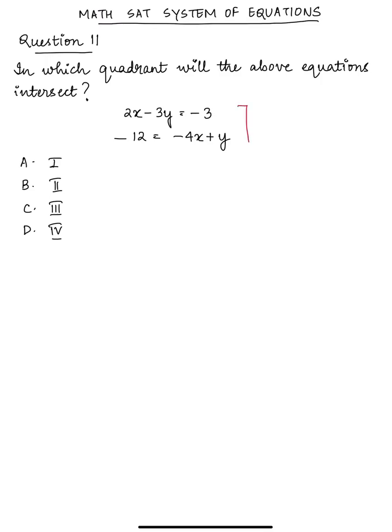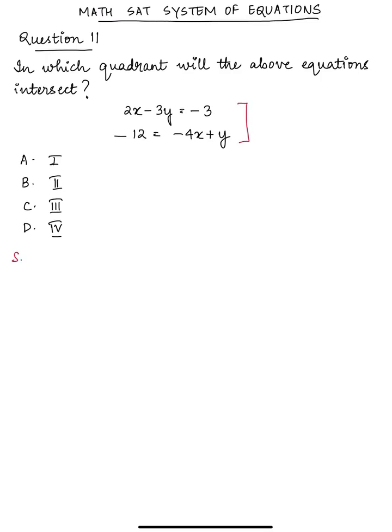Let's first solve this system of equations using the elimination technique. So elimination technique: 2x minus 3y equals minus 3, and minus 4x plus y equals minus 12.